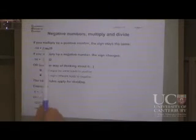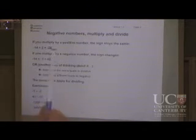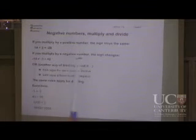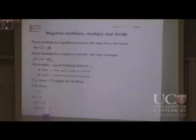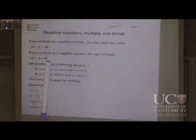So negative 14 times 2, that's a positive number, so the answer stays negative. Negative times positive is negative. Or if you multiply by a negative number, the sign changes. So say you start off with a negative, multiply by a negative, you end up with a positive.